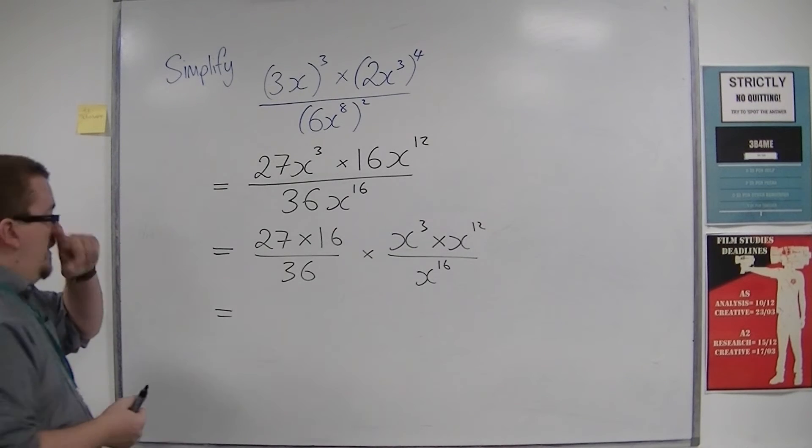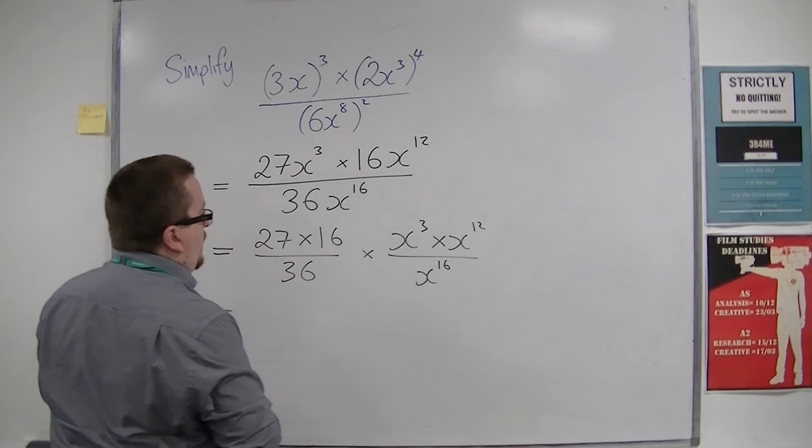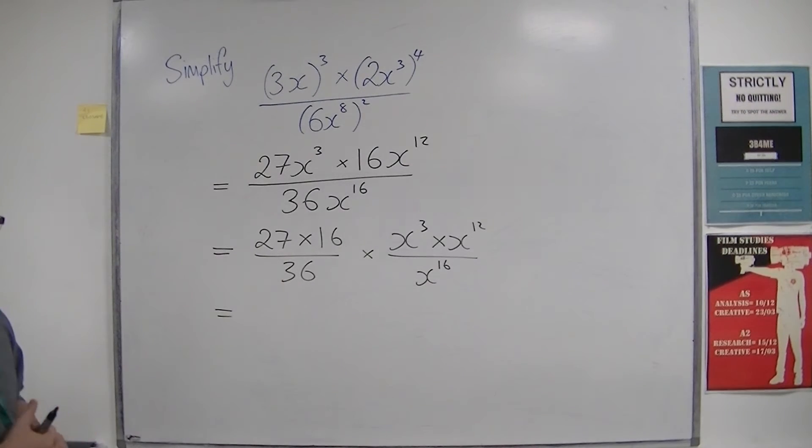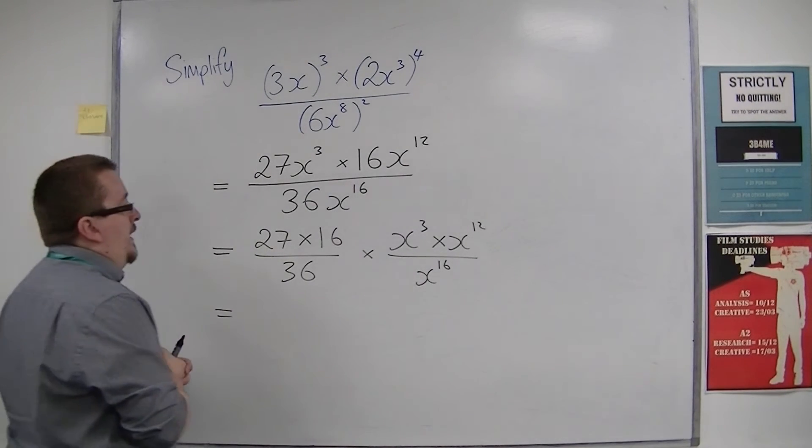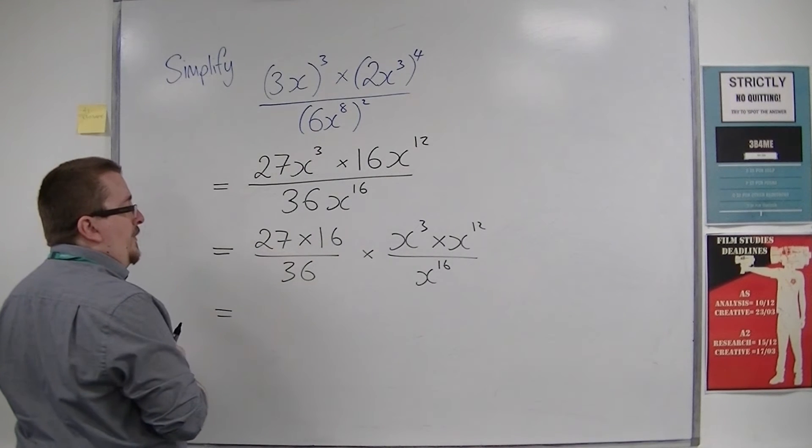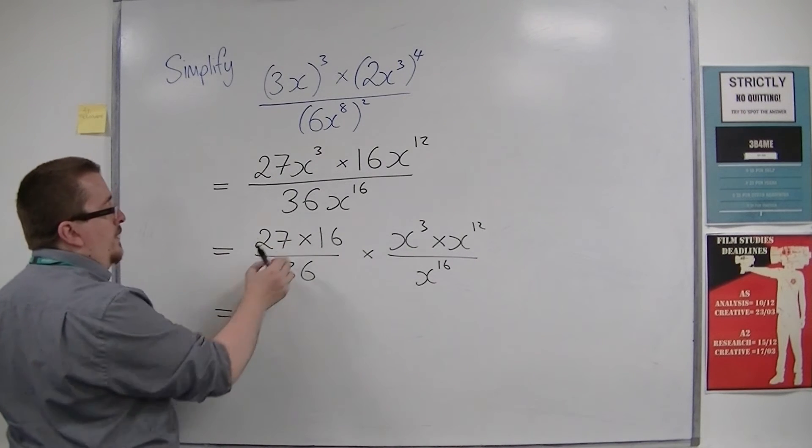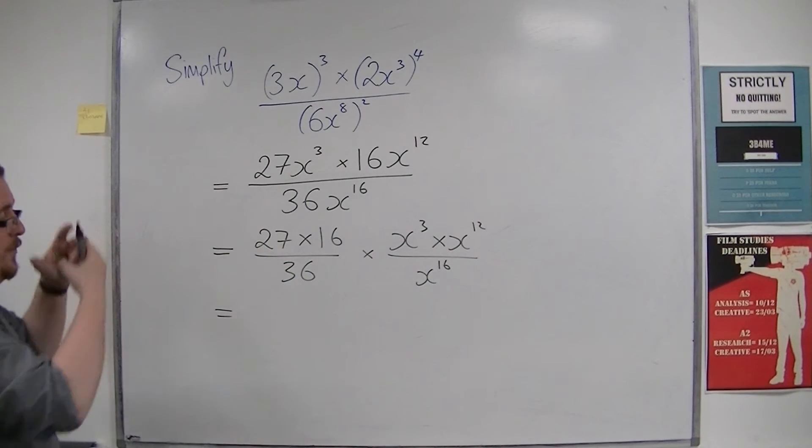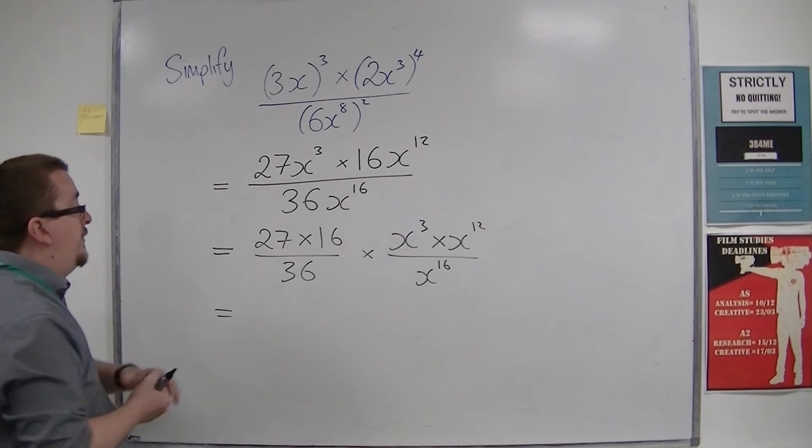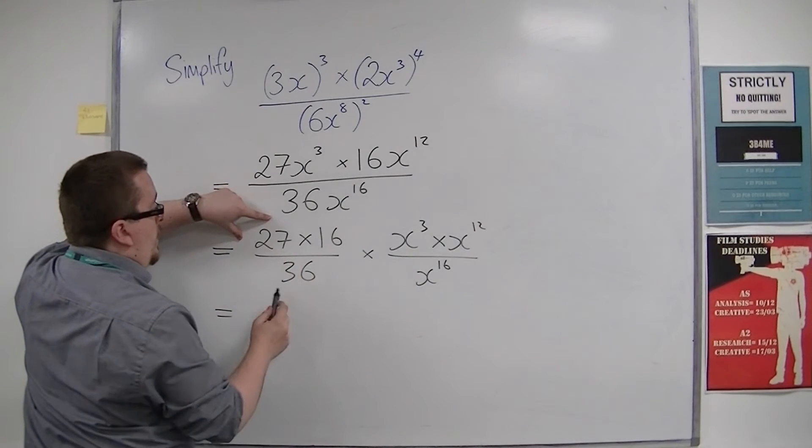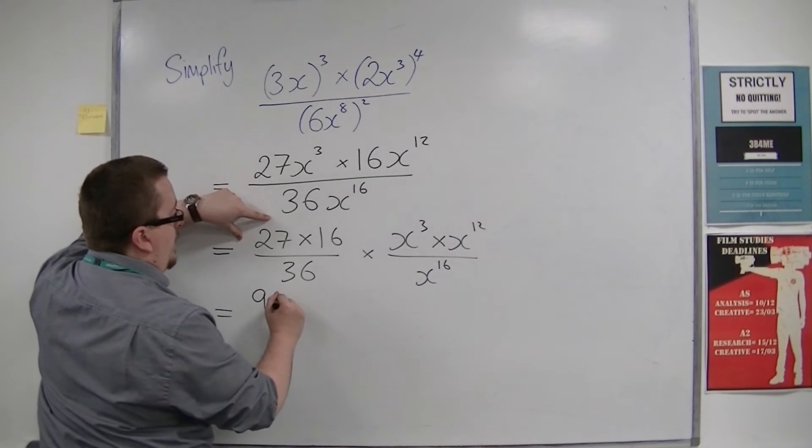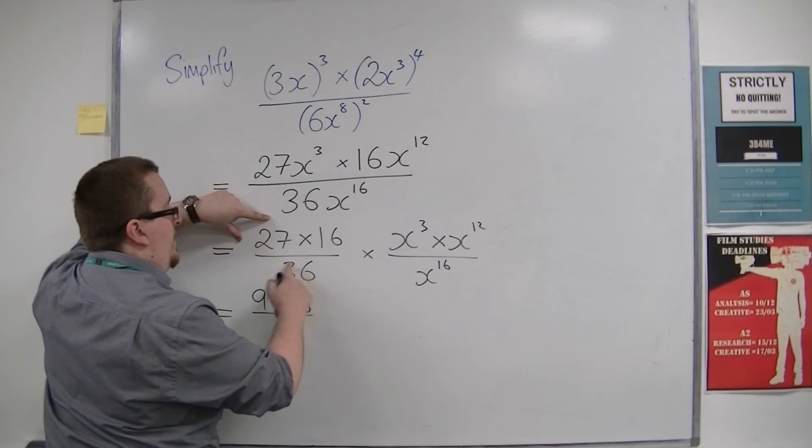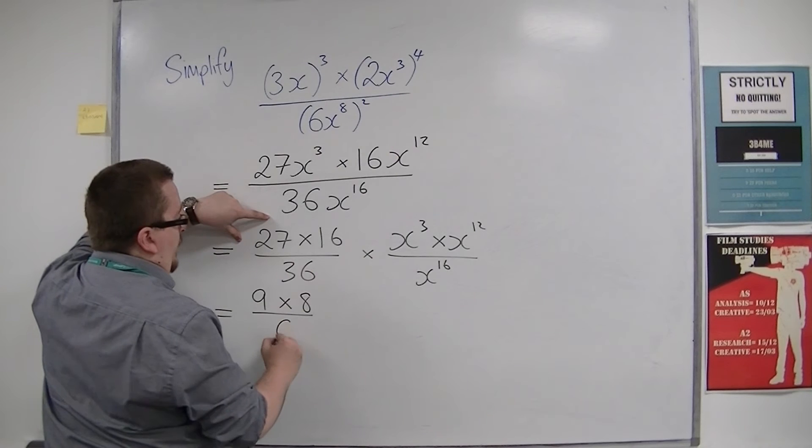So 27 and 16, and we've got this 36. So thankfully, the 27 and the 16 both contain a 3 and a 2. So we can divide both top and bottom by 6. So divide that by 3 would give us 9. Divide that by the 2 would give us 8. Divide that by the 6 would give us 6.